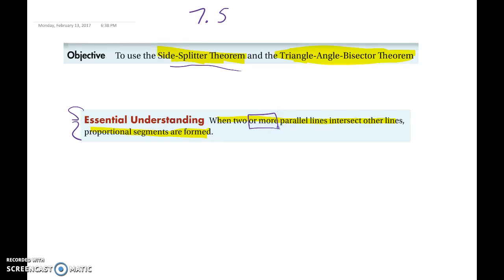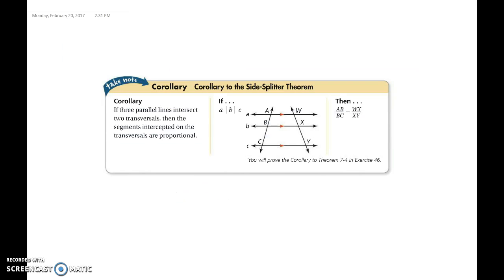So what we learned or talked about in the first video was just the side splitter theorem when we had a line that was parallel to the side of our triangle and intersected the other two sides. So now what we're going to do is what happens when we have the two or more lines that are intersected.